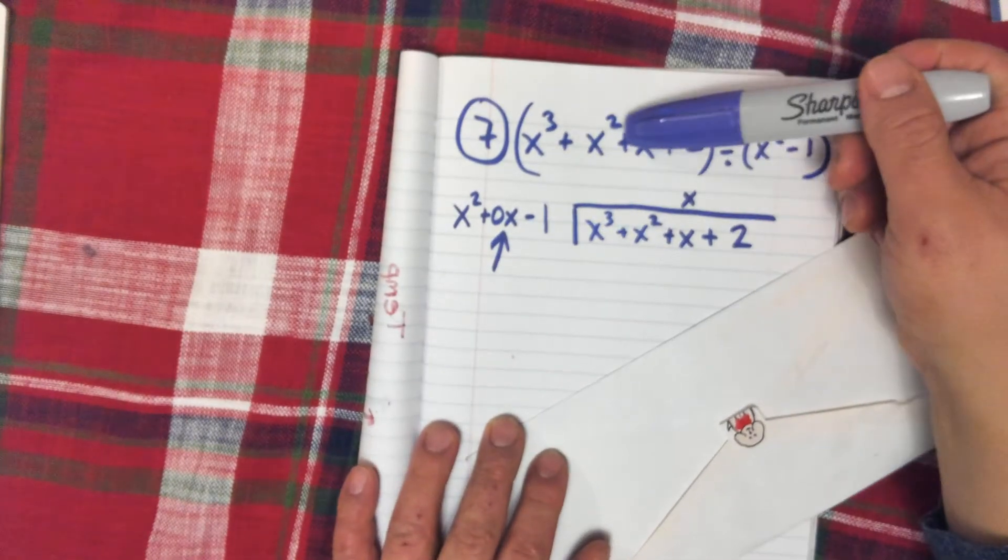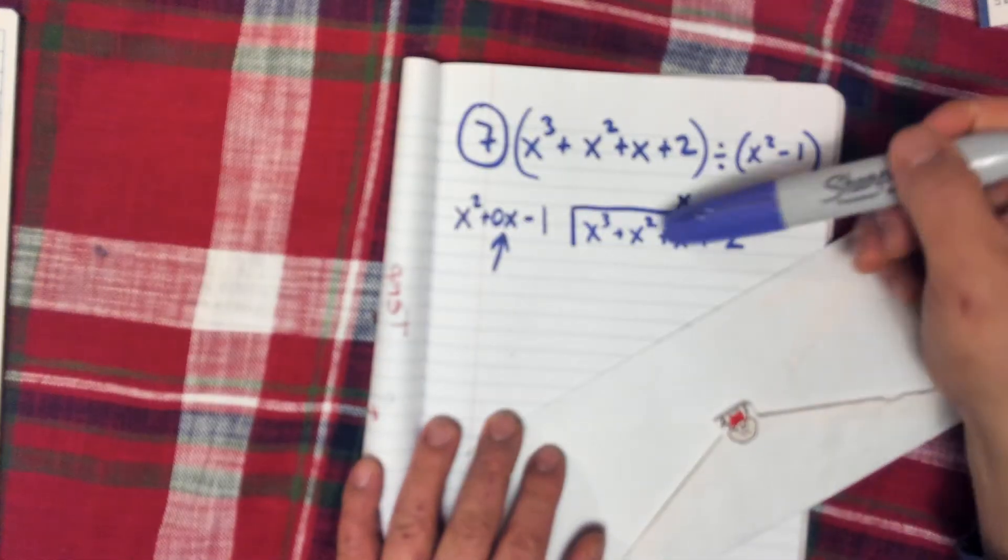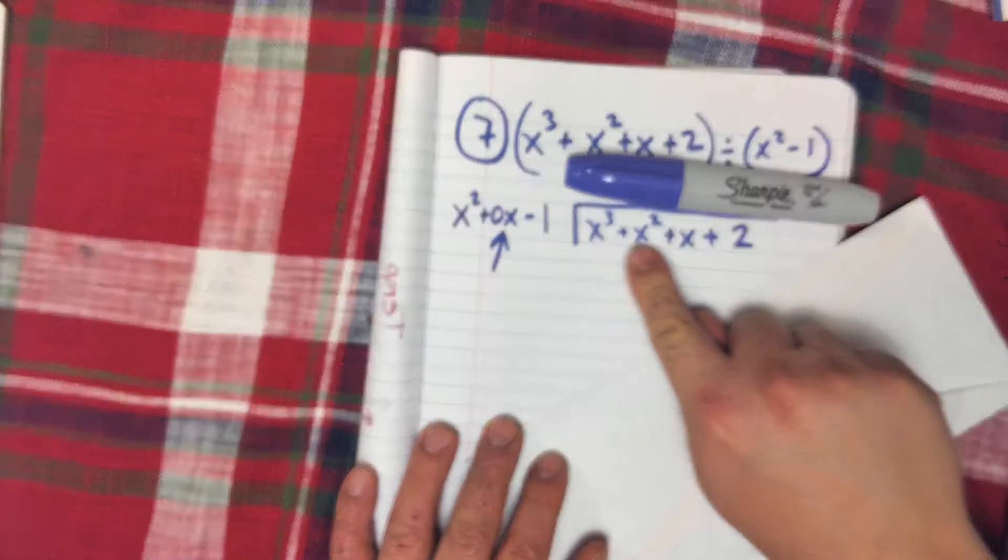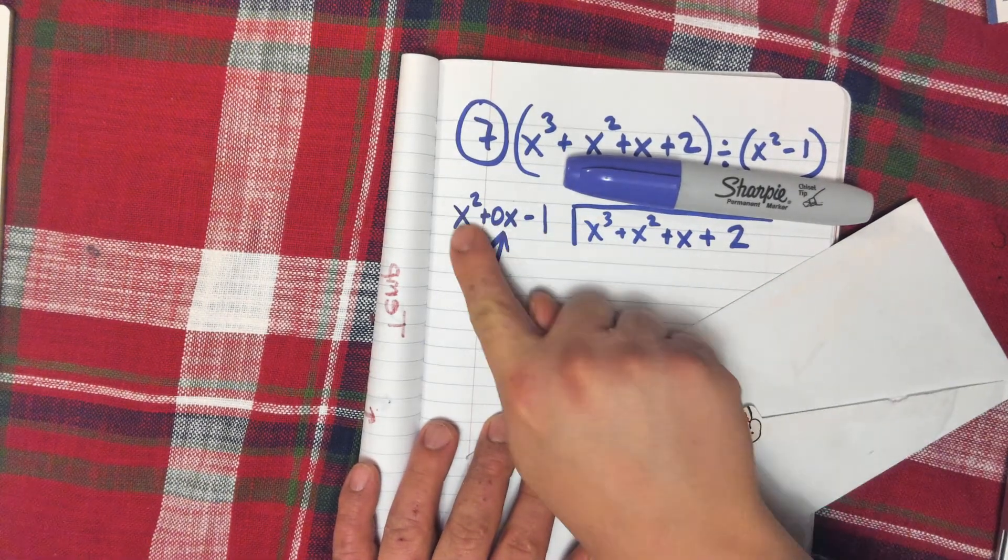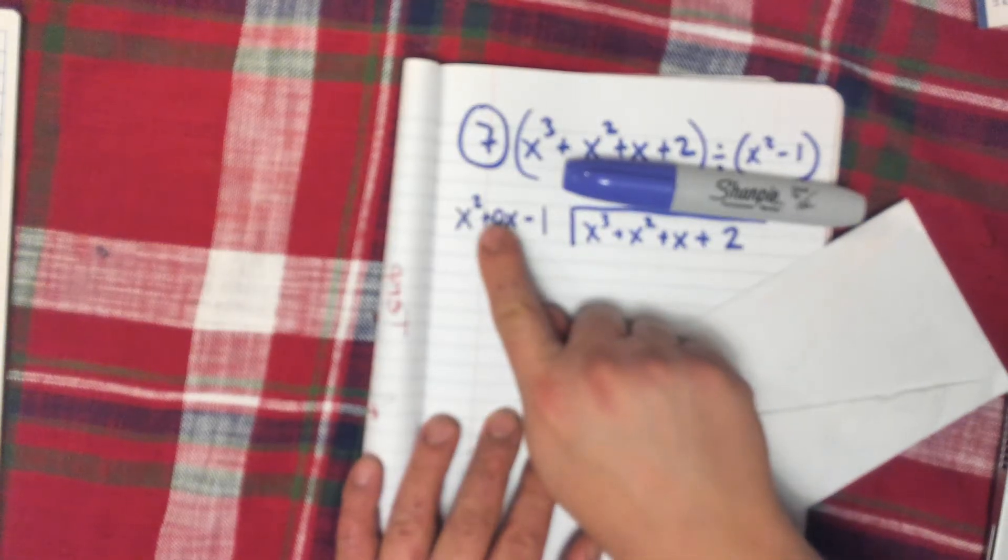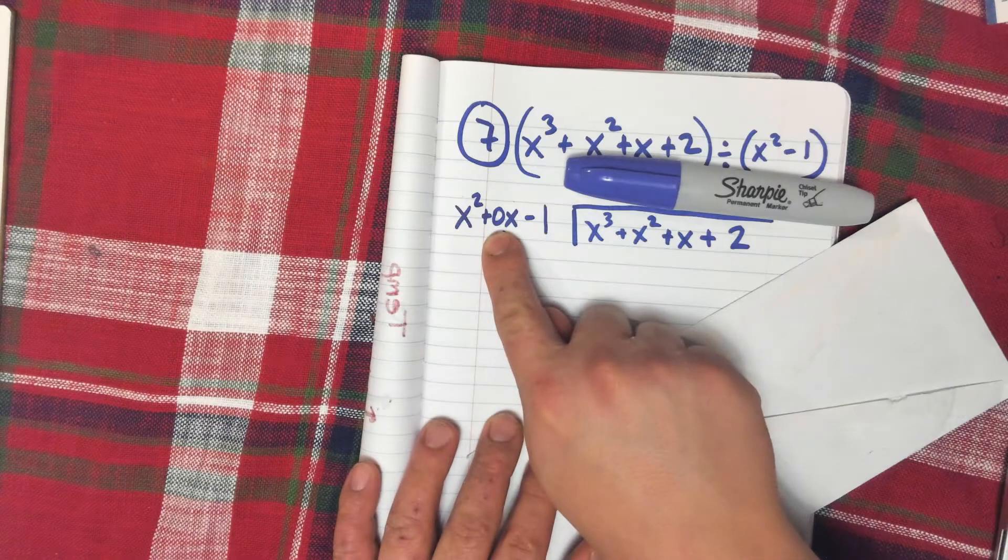This x cubed plus x squared plus x plus 2 is being divided by this polynomial here, and I'm adding that 0x to the middle.